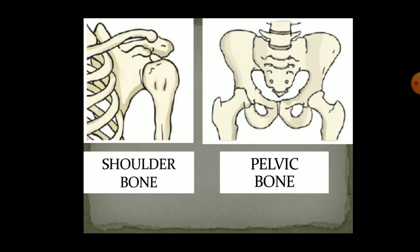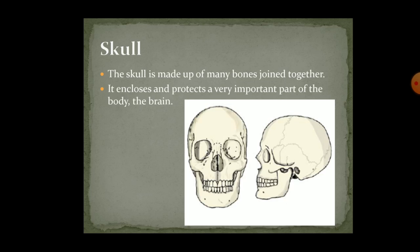Next come the shoulder bone and the pelvic bone. When you push the wall you can feel a structure coming out from the back — that structure is known as the shoulder bone. The pelvic bone is present below your stomach and helps you to sit; without it, it would be difficult to sit properly. Next is the skull, which is very important as the brain — an important part of our body — is protected inside the skull. The skull is not only one bone; it is made up of many bones joined together.